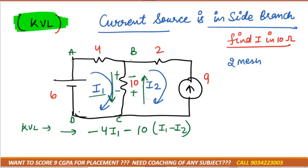C to D nothing is there, leave it. D to A, then that would be plus 6 is equal to 0. This is our first equation.